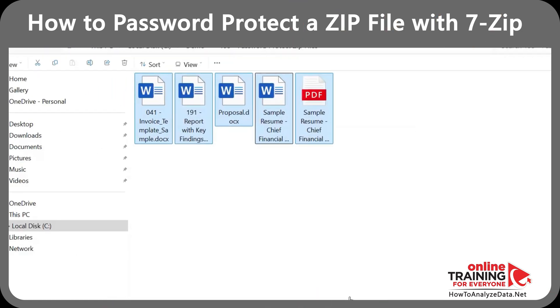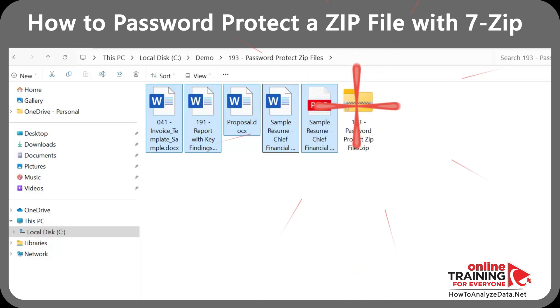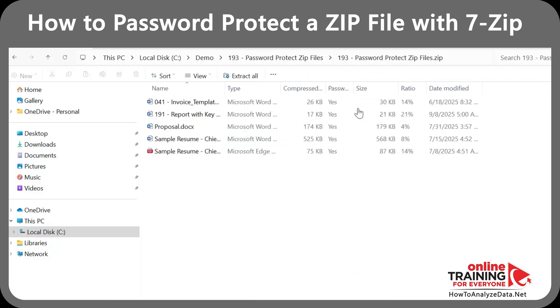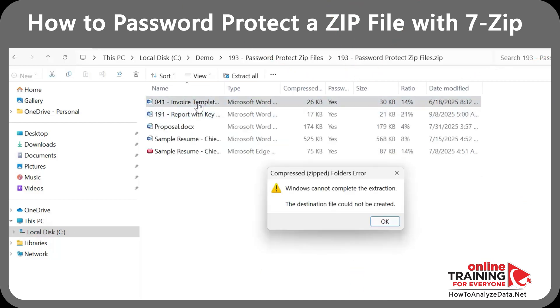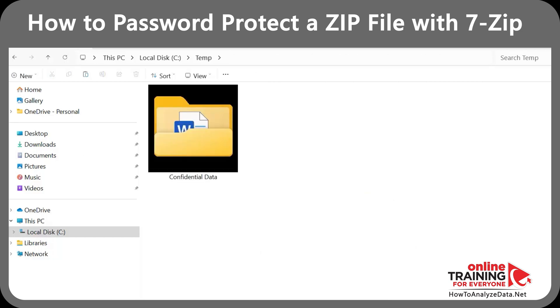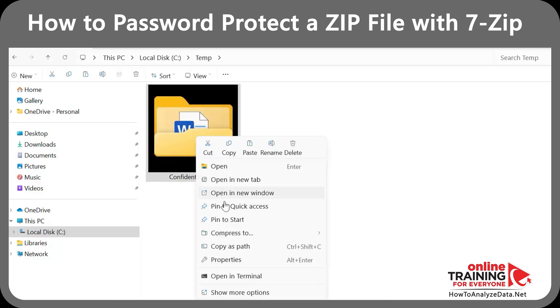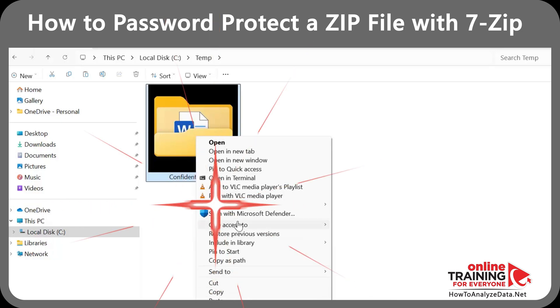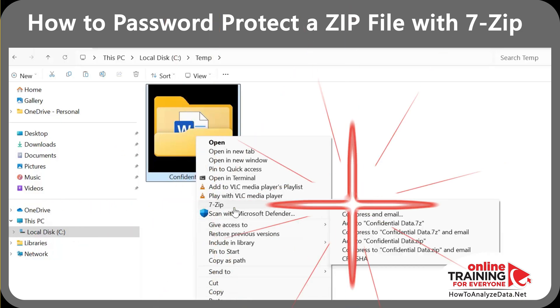7-Zip will generate a zip archive with all the files inside. Without knowing the password, you cannot see the content of the files. If you need to zip an entire folder, you can just right-click on the folder, select Show More Options, and follow the same process.